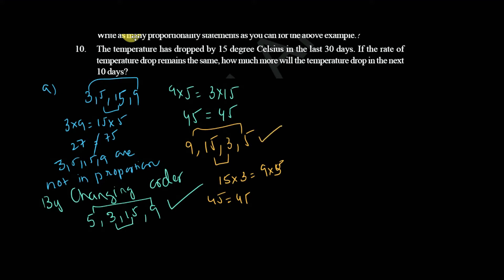Then another one. 15, 9, 5, 3. Is that possible or not? 9, 5 is 15. Then 3, 5, 9, 15. This is also possible. This many types are possible to solve the question.